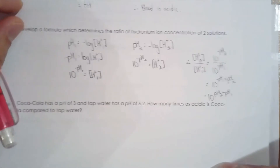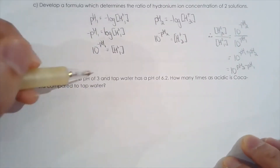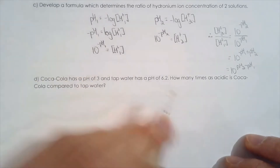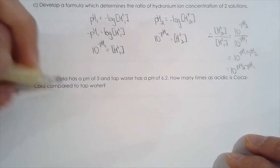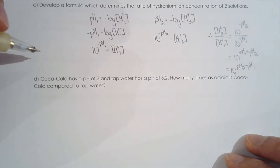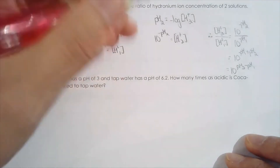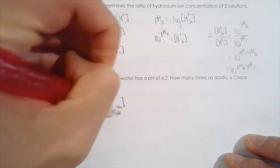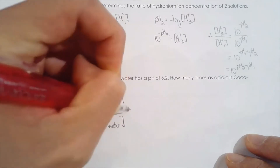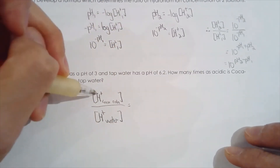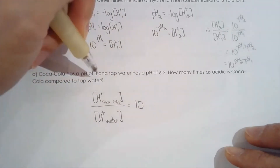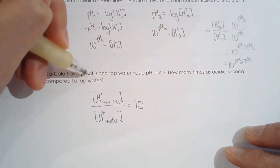Let's take a look: Coke has a pH of 3 and tap water has a pH of 6.2. Clearly Coca-Cola is much more acidic than water. So how many times as acidic is Coca-Cola compared to tap water? By the way, if you do this calculation you would probably not drink as much Coke as before — it is pretty bad for you. So we're looking at the hydronium ion concentration of Coca-Cola over water. The pH of water is 6.2 and Coke has a pH of 3.